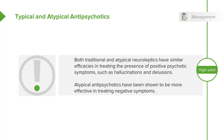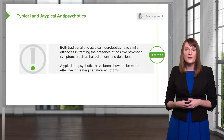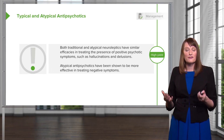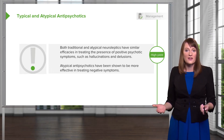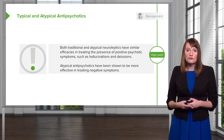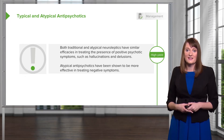Both traditional and atypical neuroleptics have similar efficacies in treating positive symptoms of psychosis — things like delusions, hallucinations, and bizarre behaviors. However, when it comes to treating the negative symptoms of psychosis — things like flat affect, little motivation, poor energy, and alogia — that's better treated with one of the newer atypical antipsychotics.